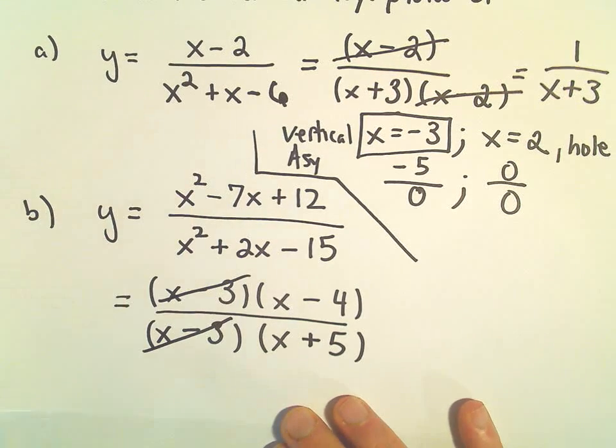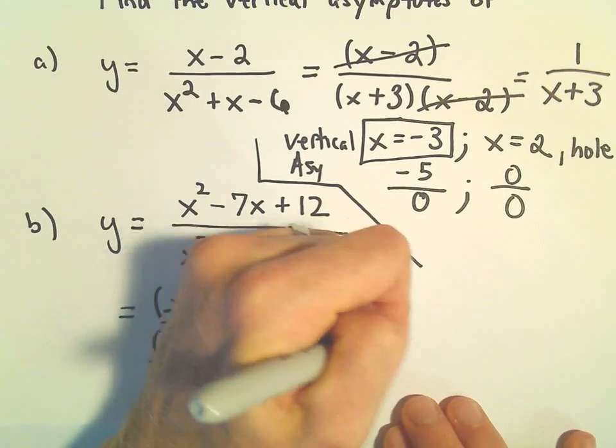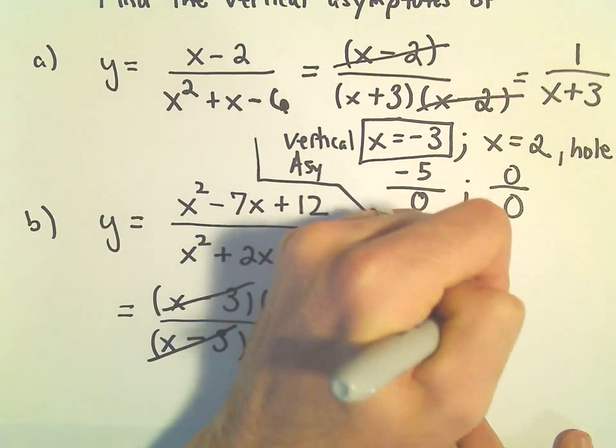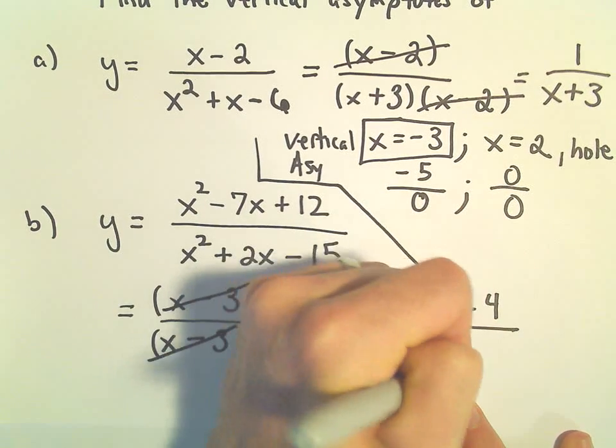So what we can do is just, again, kind of cancel out the common factors. And we would be left with x minus 4 over x plus 5.